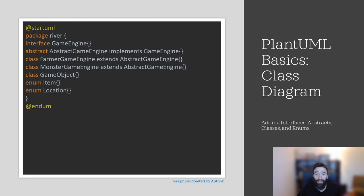You'll remember from our recent project, we should have the interface GameEngine, the classes AbstractGameEngine, FarmerGameEngine, MonsterGameEngine, GameObject, and the two enums, Item and Location. In PlantUML, the positioning of the curly brace is important. The closing curly brace cannot be on the same last line of text to be included in your diagram; otherwise, your UML diagram is replaced with an error screen. You must hit return at least once before typing your closing curly brace. There are two different ways to show relationships in PlantUML — I have used the implements and extends text to show relationships between the interface, abstract, and the classes.